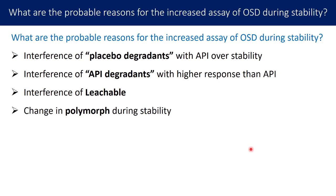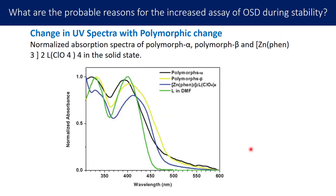The fourth reason is change in polymorph during stability, which can result in either an increase or decrease in assay. A change in polymorph can alter UV spectra and hence the UV response. If the UV response at the detection wavelength increases due to the polymorphic change, the response increases over time during stability, leading to quantification of higher assay content. Since the polymorph change is incremental in nature, the assay increase is also incremental.